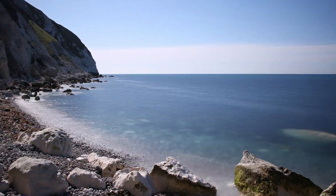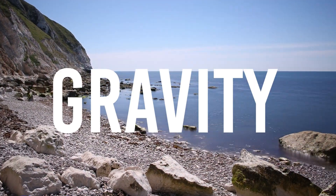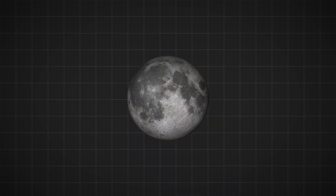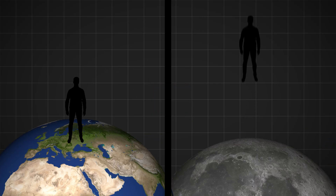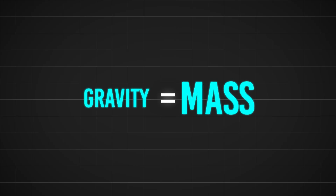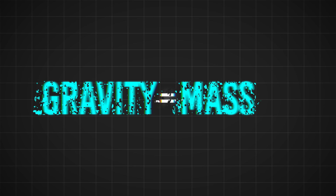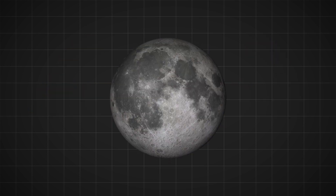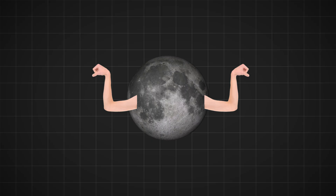The first step to understanding tides is understanding gravity. You are standing on the earth, and the earth has gravity. But the moon also has gravity. And if you were standing on the moon, you could jump a lot higher than if you were standing on earth. This happens because gravity depends on mass. The bigger something is, the more gravity it has. Earth is pretty big, so its gravity is strong. But the moon is a lot smaller, so its gravity is weaker.